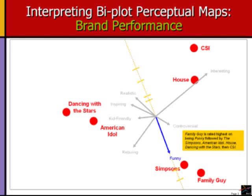Note that one does not interpret a brand point's distance to an arrow or to an arrowhead, but rather we only interpret the point's distance quote-unquote out on the arrow. It does not matter that The Simpsons is close to the Funny arrow and CSI is far away from the arrow. It only matters that Simpsons is further out on the arrow in the perpendicular sense. Similar interpretations, of course, are applied to all attributes in the map space.